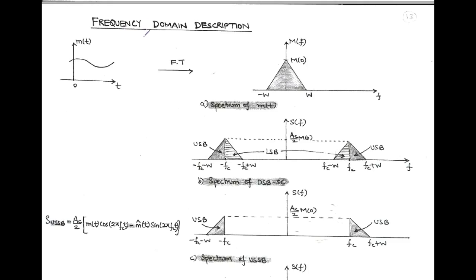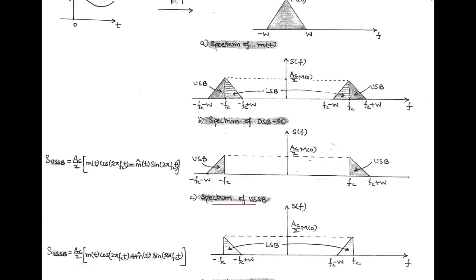Next is the frequency domain description of single sideband. We consider an arbitrary message signal in the time domain, m(t), whose frequency domain version is obtained by Fourier transform, denoted M(f). Figure A is the spectrum of the message signal having bandwidth W. Since we consider an arbitrary message signal, the spectrum is also arbitrary. After double sideband suppressed carrier modulation, the spectrum centered around the origin is shifted to ±f_C, as discussed in previous lectures. To obtain the single sideband spectrum, we suppress one of the sidebands. When we suppress the lower sideband, the result is called upper single sideband.